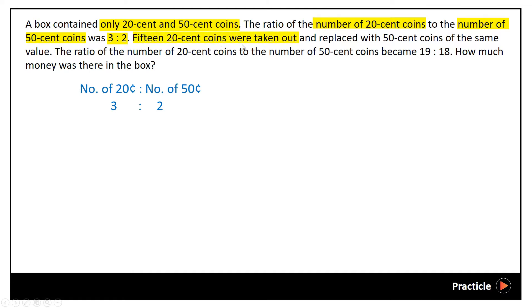15 20-cent coins were taken out and replaced with 50-cent coins of the same value. So we need to find out what's the value of the 15 20-cent coins. And we do that by taking 15 times 20 which gives us 300 cents. Then after doing that, we will need to find the number of 50-cent coins that this can be exchanged for. So we do that by taking 300 divided by 50 and this would give us 6.